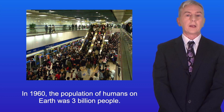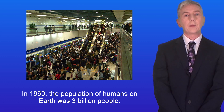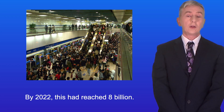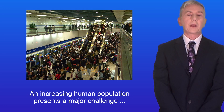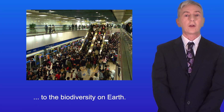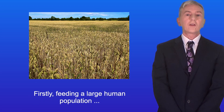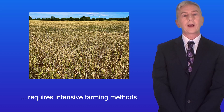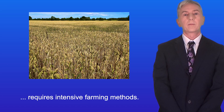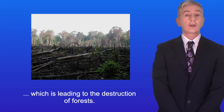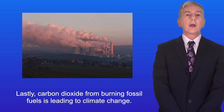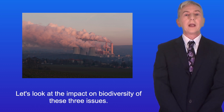In 1960 the population of humans on earth was 3 billion people. By 2022 this had reached 8 billion. An increasing human population presents a major challenge to the biodiversity on earth. Firstly, feeding a large human population requires intensive farming methods. Secondly, human activity requires a great deal of space which is leading to the destruction of forests. And lastly, carbon dioxide from burning fossil fuels is leading to climate change. So let's look at the impact on biodiversity of these three issues.